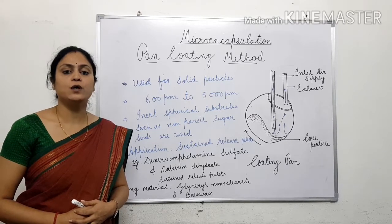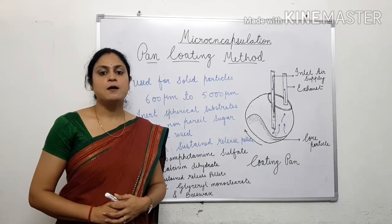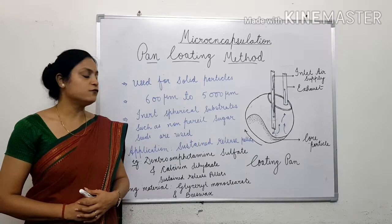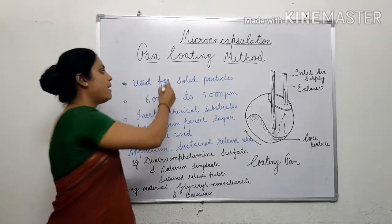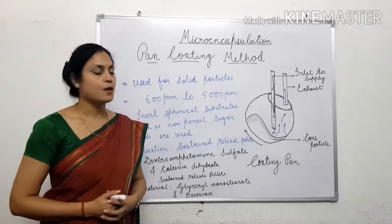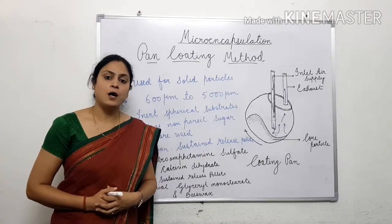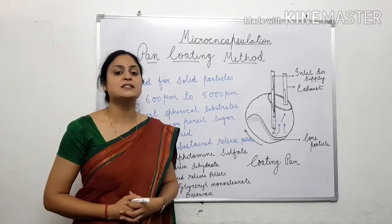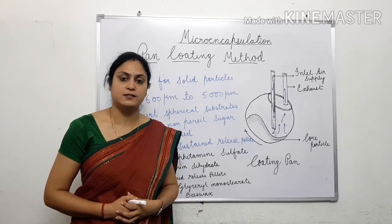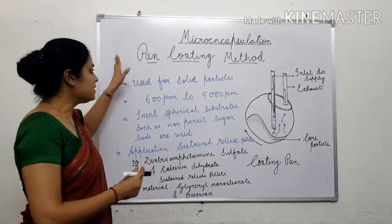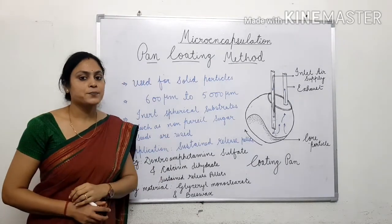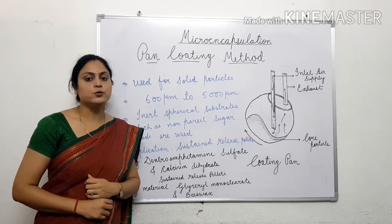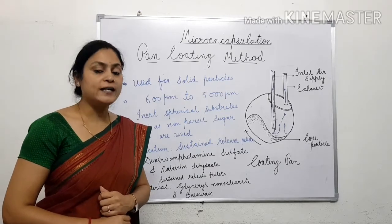Dear students, in continuation of our discussion over various micro-encapsulation methods, today we are going to discuss another method of micro-encapsulation — the pan coating method. So far, we have discussed the air suspension method, coacervation method, solvent evaporation method, spray drying and spray congealing method. The pan coating method is the oldest method used for the formulation of micro-capsules or for coating of solid particles.